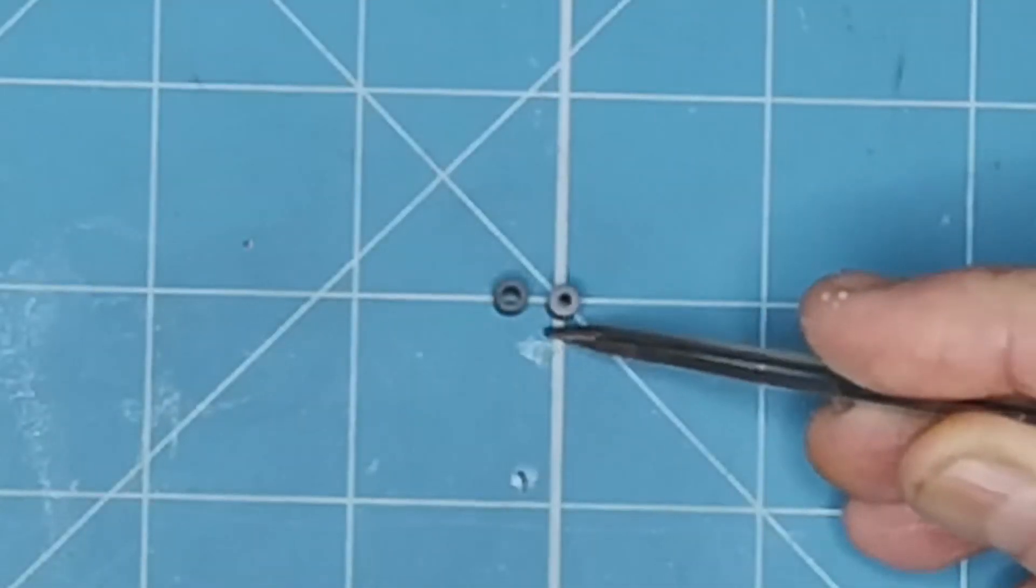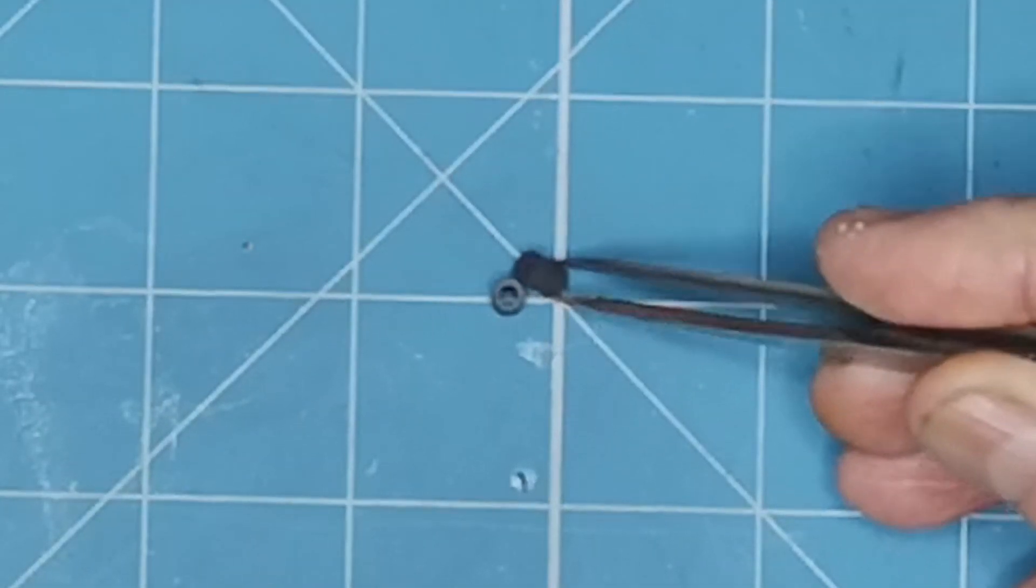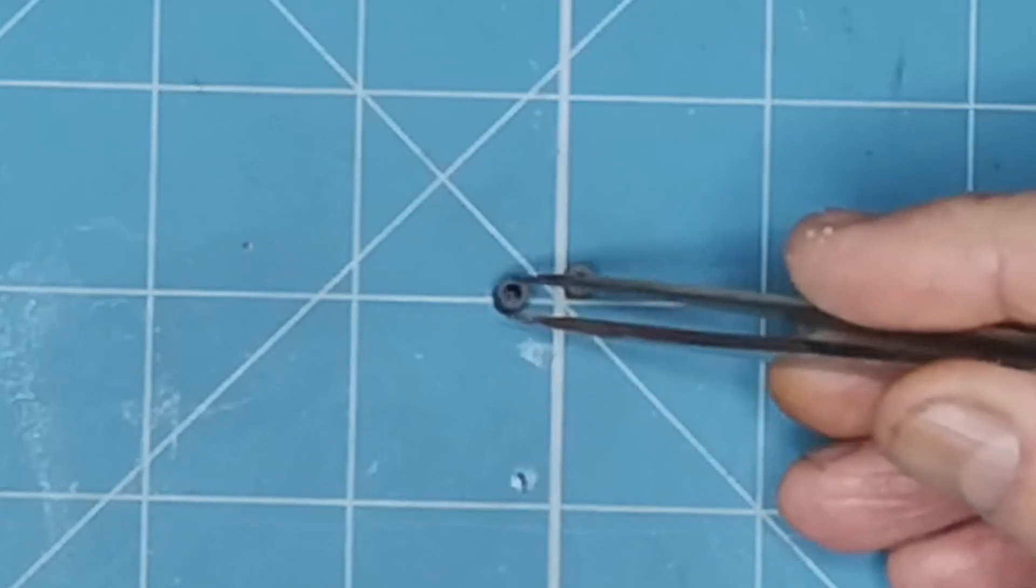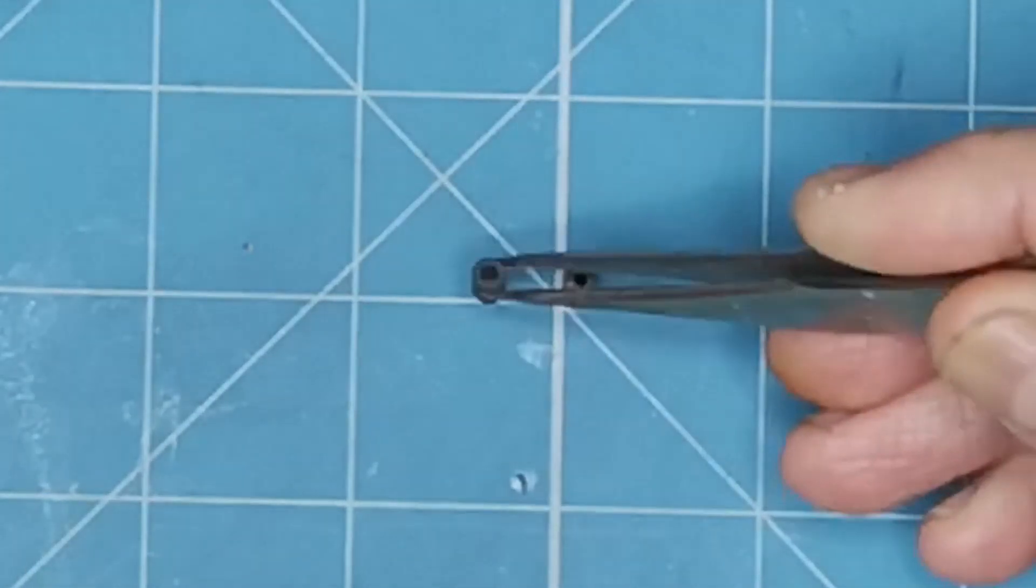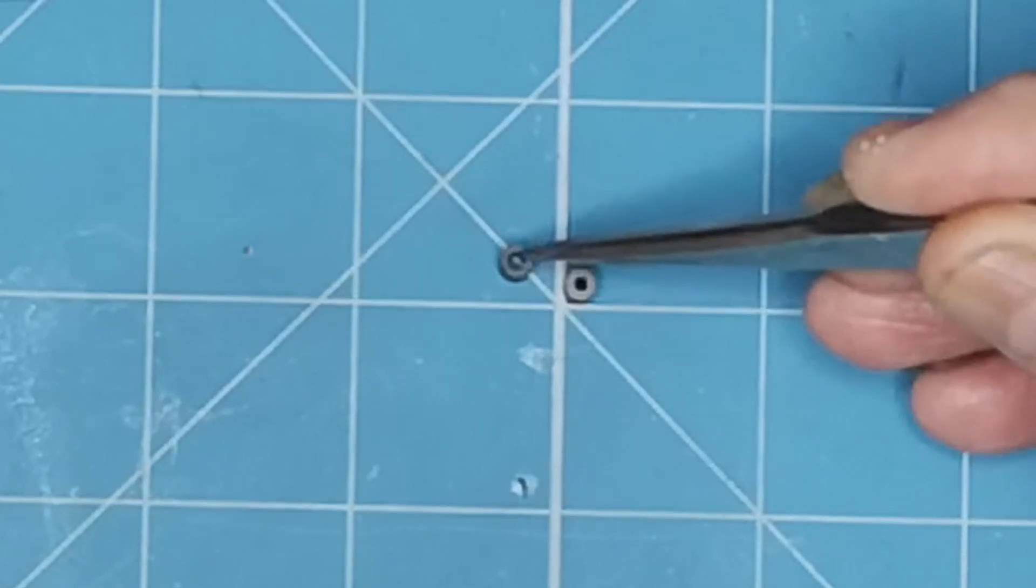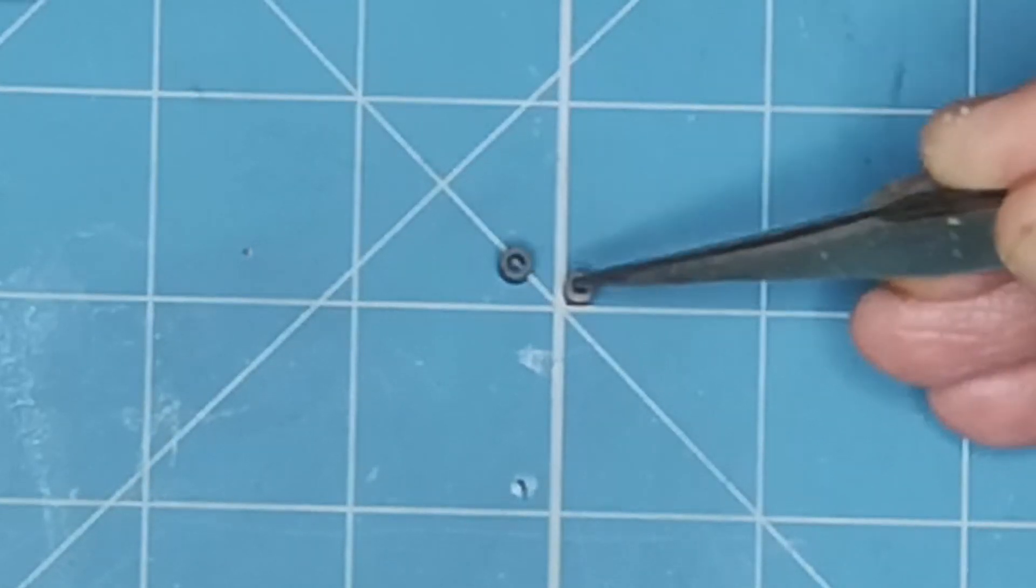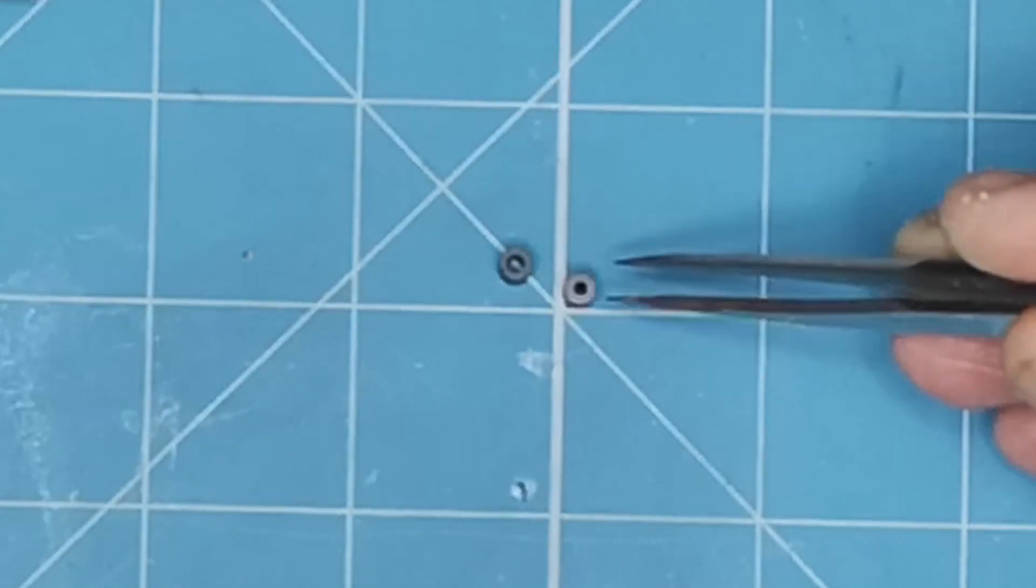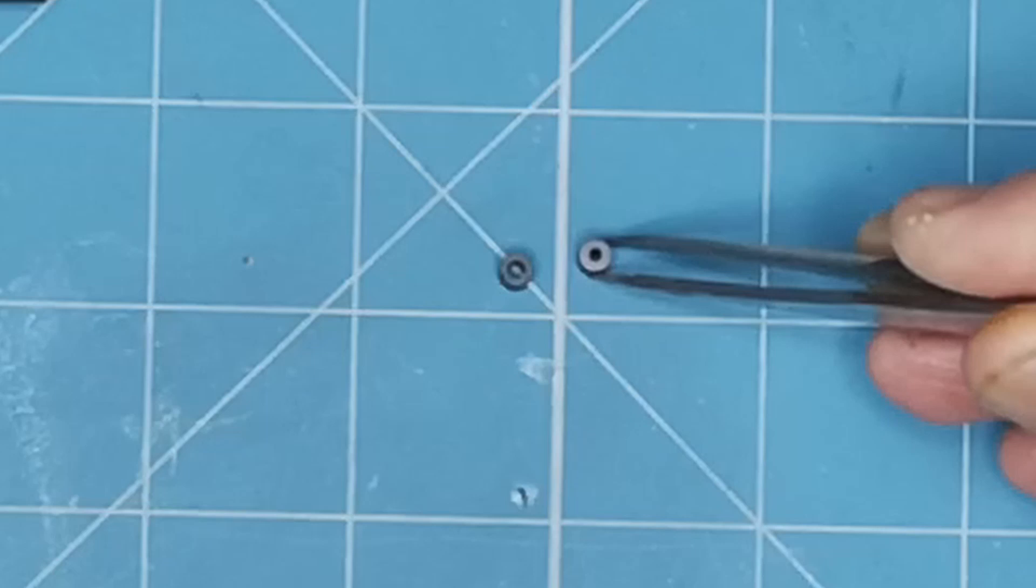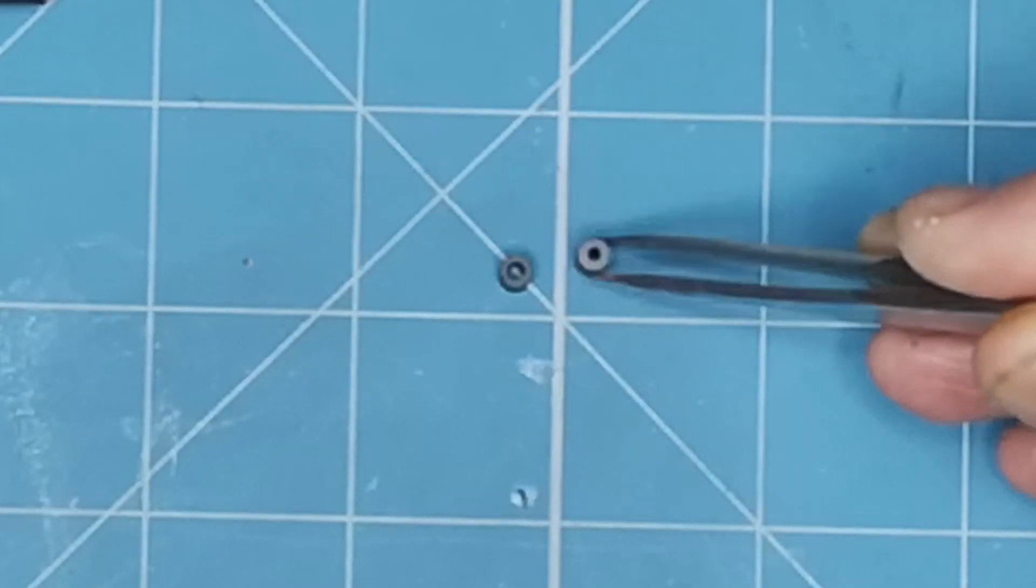If you can see here, I've got two ferrite beads. That's what they look like. And you'll notice that the one has got quite a large diameter hole in the middle. That's the one we're going to use. This one, we just won't be able to get enough wire through the center. So, we'll put that away.